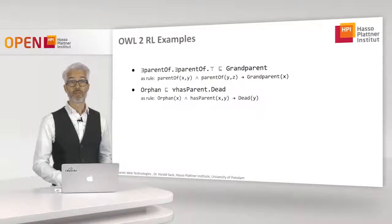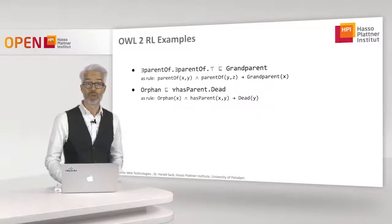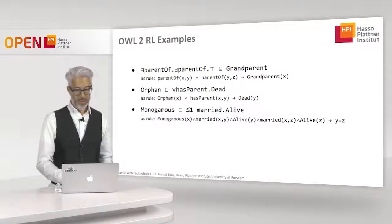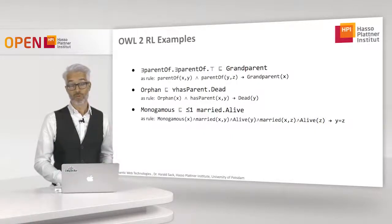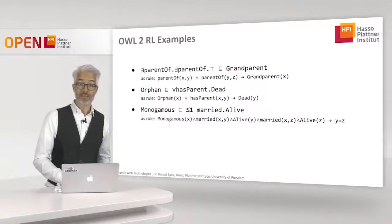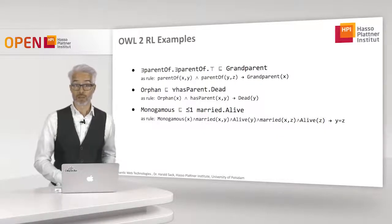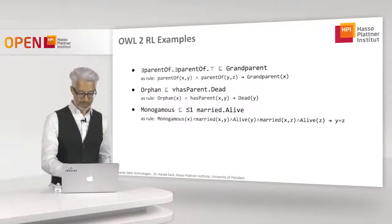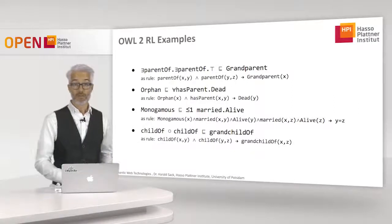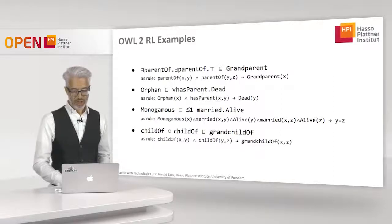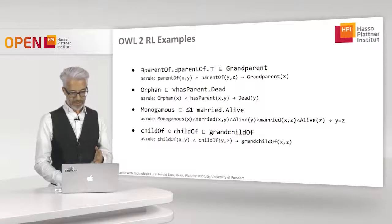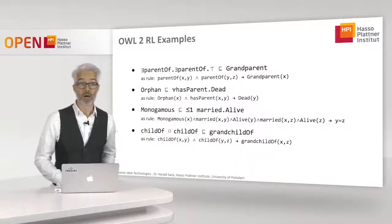More OWL 2 RL examples: an orphan is someone whose parents are dead — if X is an orphan and X has parent Y, then Y must be dead. Monogamous means having at most one living married partner — expressed as a number restriction rule. The child-of chain: if X is child of Y and Y is child of Z, then X is grandchild of Z.